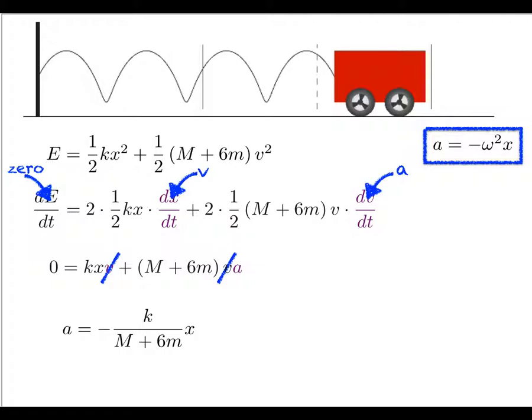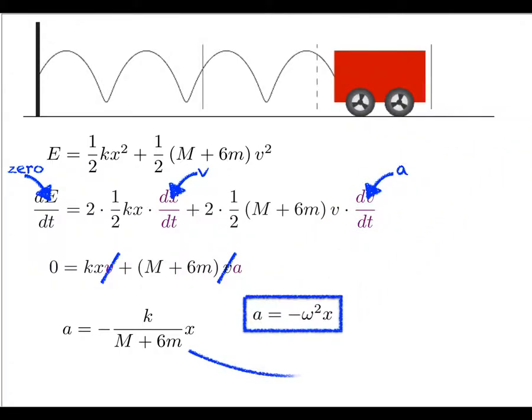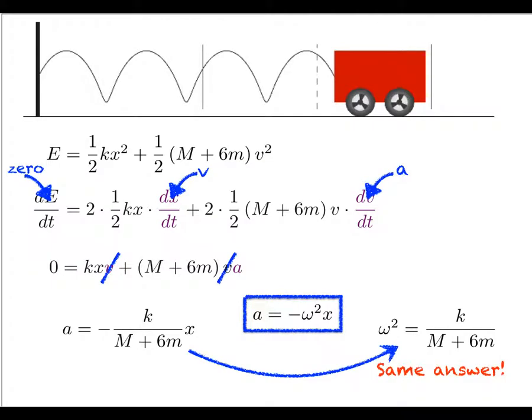This is the exact same expression we got a few steps back, which is a good sign — we always hope to get the same answer when solving a problem two different ways. We again have the form a equals minus omega squared x, with omega squared equal to k over (M + 6m). Same answer.